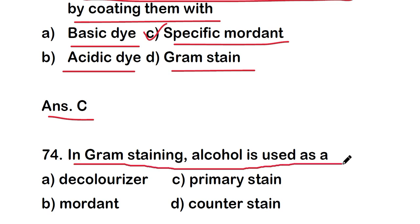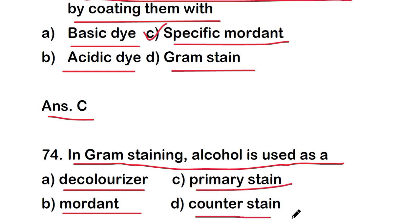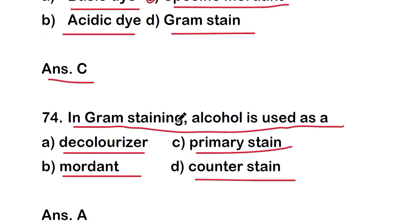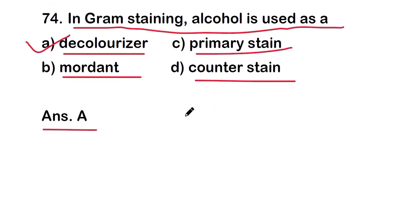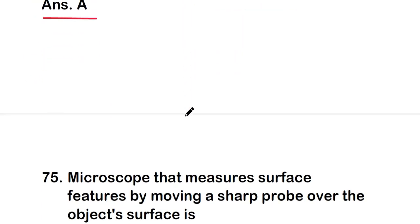Next question: in gram staining, alcohol is used as — decolorizer, mordant, primary stain, or counter stain? The right answer is option A — decolorizer. In gram staining, alcohol is used as a decolorizer.